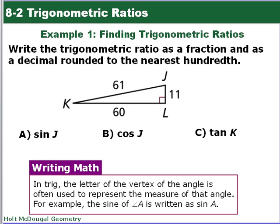Write the trig ratio as a fraction and as a decimal rounded to the nearest hundredth. One thing I like to tell my students: there's a mnemonic SOH-CAH-TOA that helps you remember the ratios. This means sine is opposite over hypotenuse, cosine is adjacent over hypotenuse, and tan is opposite over adjacent. So if that helps you, then use it. If not, then forget about it. All right. So in trig, the letter of the vertex of the angle is used to represent the measure of that angle. For example, the sine of angle A is written as sine A.